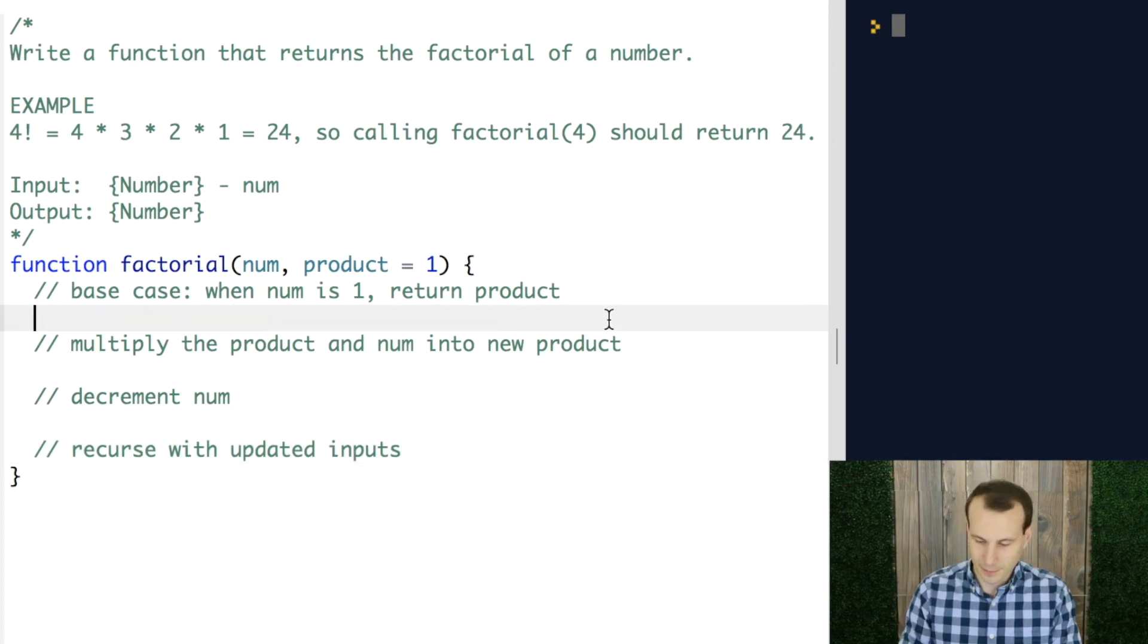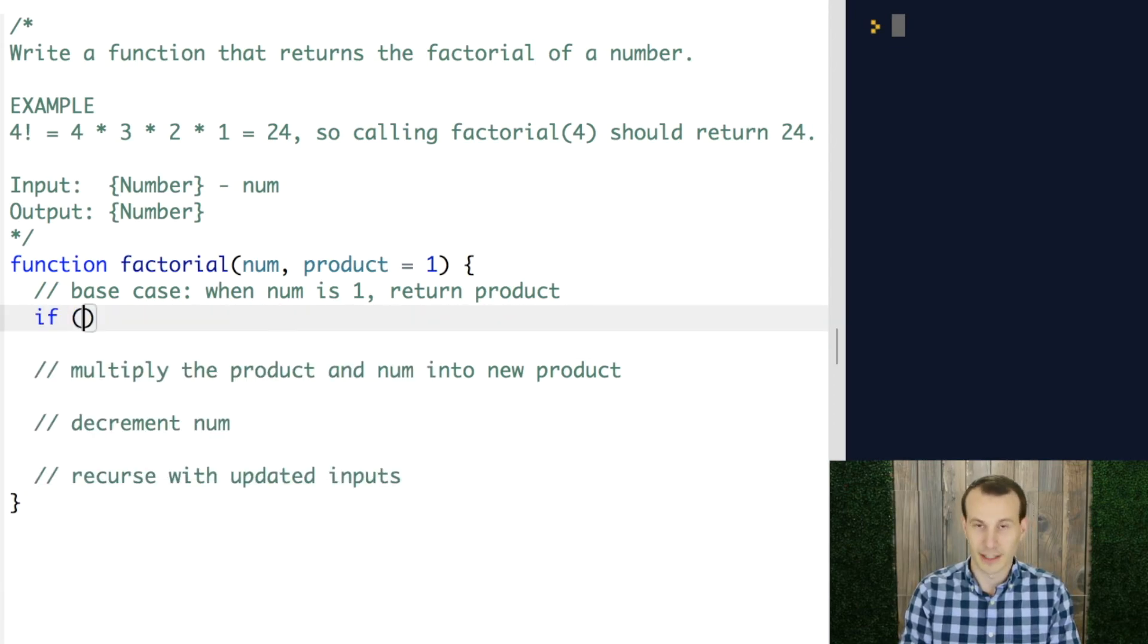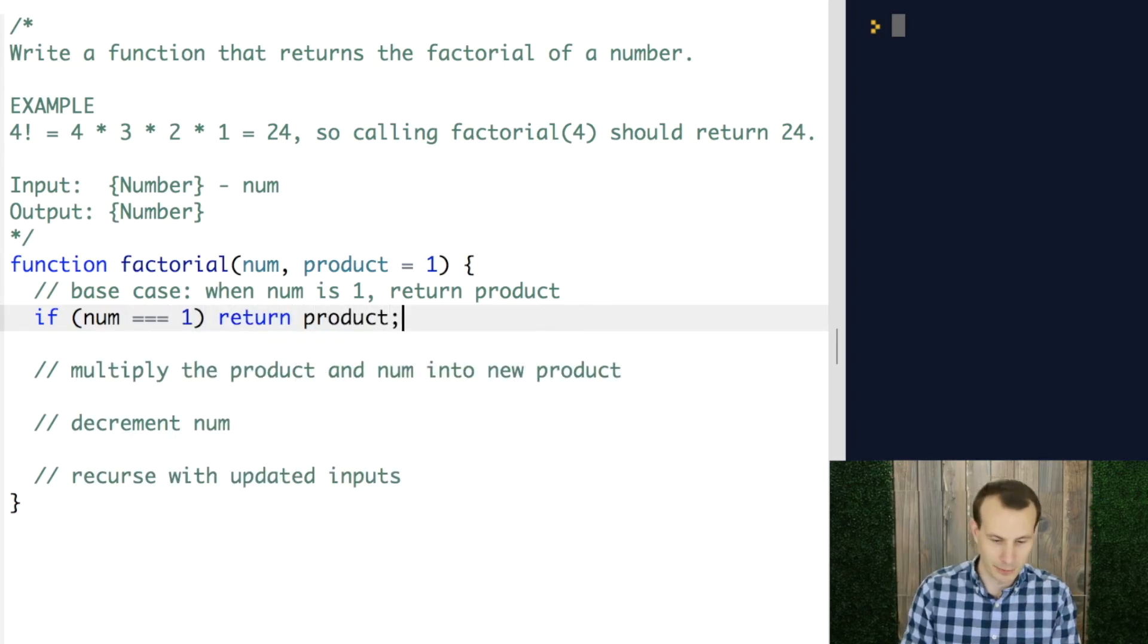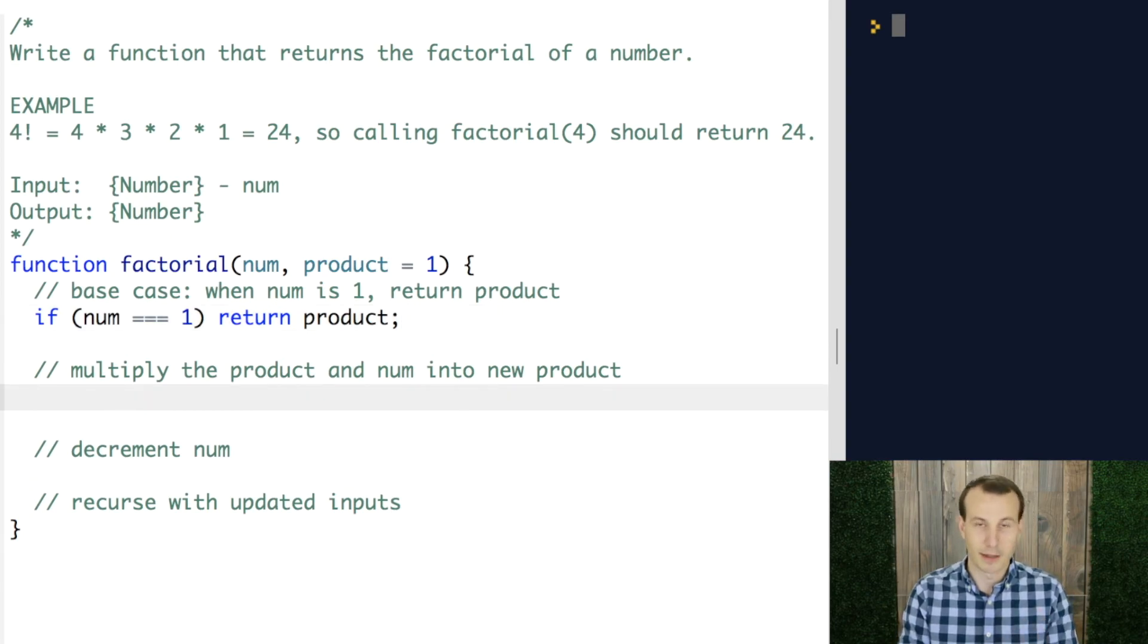So, the base case here is going to be if, right, this conditional statement. If we look at what we have drawn out, it's if. We're saying maybe it's when num is 1 is when we want to return the product. Because at that point, it will be built up.